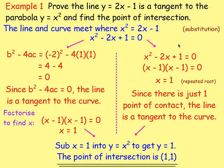Example 1: prove that the line is a tangent to the parabola and find the point of intersection. Substitute the equation of the straight line y equals 2x minus 1 into the equation of the curve, so x squared equals 2x minus 1. Rearrange into ax² + bx + c = 0. Work out b² - 4ac: you get zero, confirming the line is a tangent. Then factorise to get x equals 1, sub into one of the equations to get y, and double-check with the other equation.